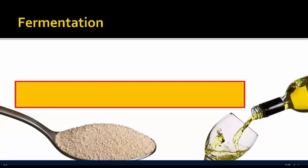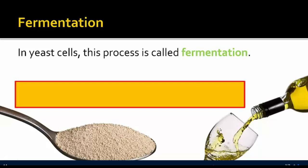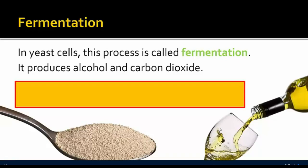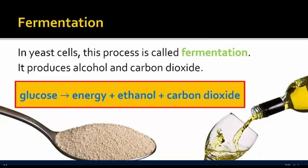Another form of anaerobic respiration is fermentation, which occurs in yeast cells. Fermentation produces alcohol and carbon dioxide. For example, if grapes are stored in an airtight container with no oxygen, fermentation occurs — that's essentially how alcohol is made from the fermentation of grapes. In this process, glucose breaks down to form ATP and produces ethanol, which is an alcohol, along with carbon dioxide.